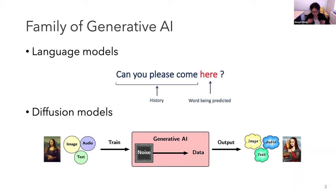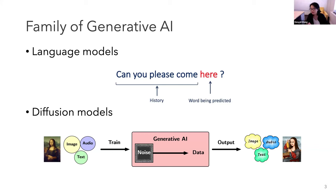I'm going to talk about diffusion models. Just to take a step back and think about generative AI - there are two major types of models. The one we use every day is language models, which usually work in an autoregressive way, generating token by token through an autoregressive transformer. The other major class is diffusion models.